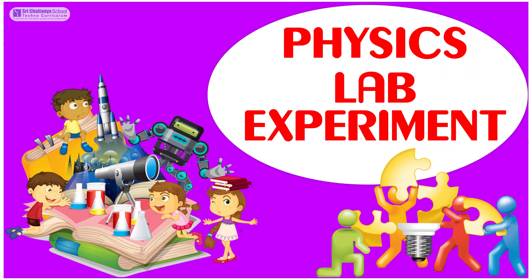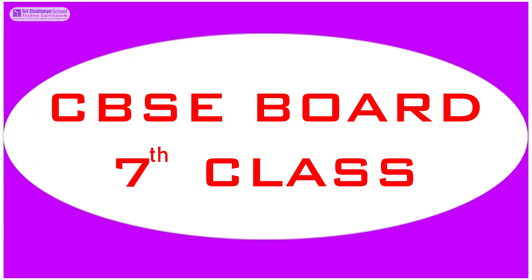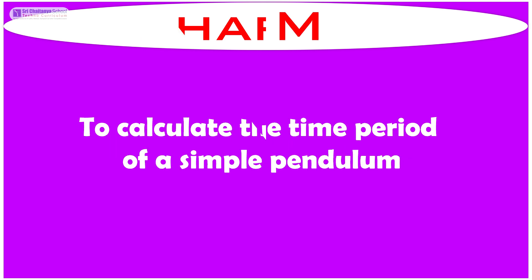Hi children, now it is time to do a physics lab experiment. This experiment belongs to 7th standard and the chapter name is Motion and Time. The aim of this experiment is to calculate the time period of a simple pendulum.